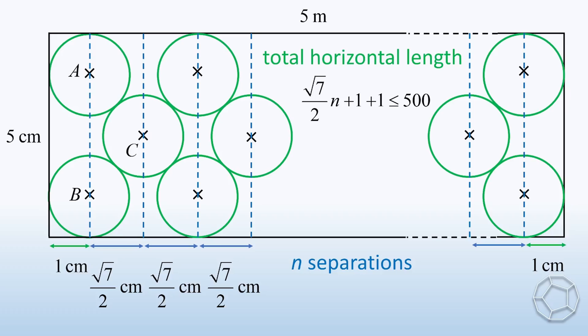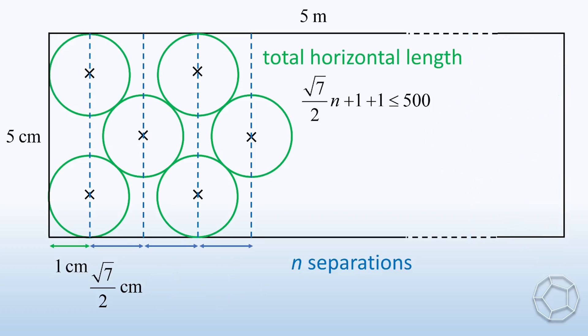The sum of lengths should be smaller than or equal to 500 cm. This linear inequality is easy to solve. The solution is n is smaller than or equal to 996 over square root 7. Let's write it as a decimal number. Therefore, the maximum value of n is equal to 376.